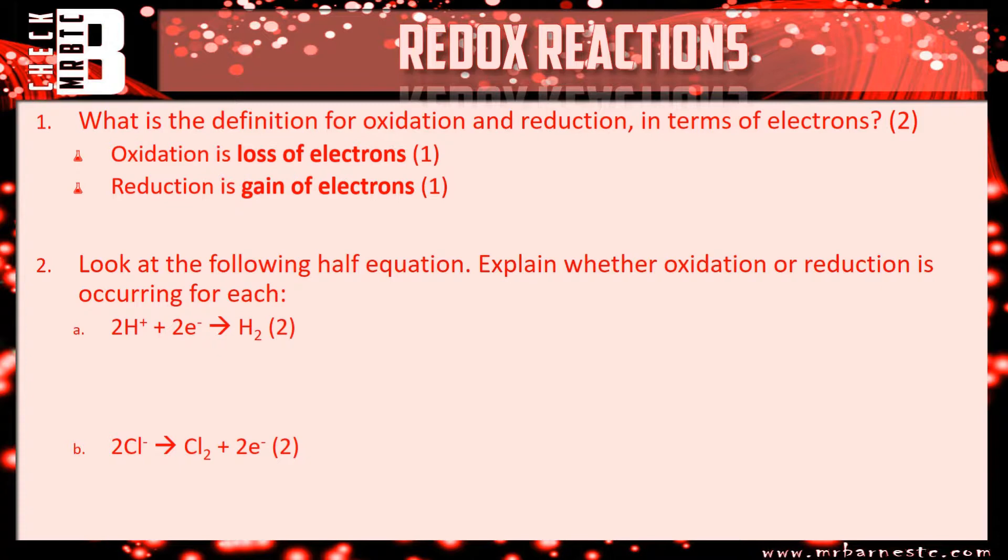Question two: look at the following half equation, explain whether oxidation or reduction is occurring for each. So you've got 2H+ + 2e- goes to H2. Your H+ ions have gained electrons to go back to H2. The 2e- is on the left hand side, therefore it's reduction. Reduction is gain of electrons. So one mark for saying reduction, and then saying the hydrogen ions have gained electrons.